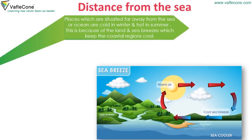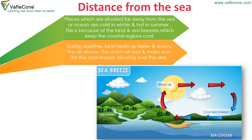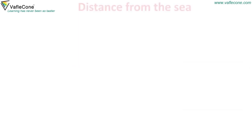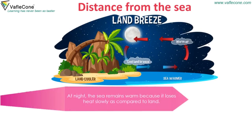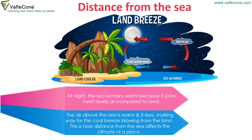Places which are situated far away from the sea or ocean are cold in winter and hot in summer. This is because of the land and sea breezes which keep the coastal regions cool. During daytime, land heats up faster and warms the air above. The warm air rises and makes way for the cool breeze blowing over the sea. At night, the sea remains warm because it loses heat slowly compared to land. The air above the sea is warm and it rises, making way for the cool breeze blowing from the land. This is how distance from the sea affects the climate of a place.